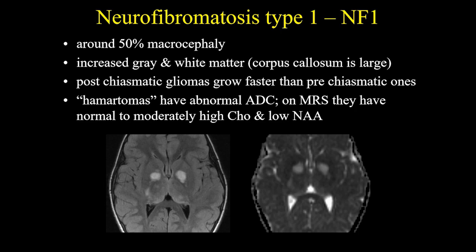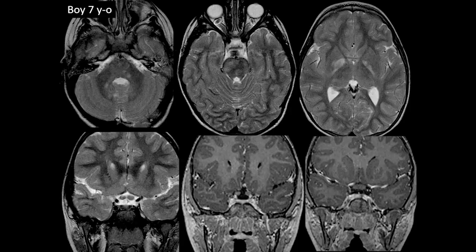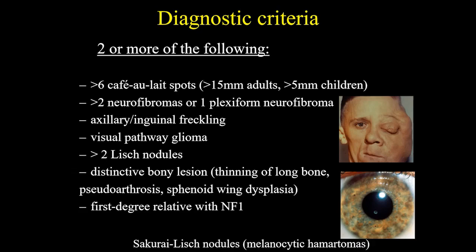Around 50% of patients have macrocephaly, possibly due to increased gray and white matter. Also, you can see that the corpus callosum is enlarged in these patients. Post-chiasmatic gliomas grow faster than pre-chiasmatic ones. Hamartomas have abnormal ADCs, and on spectroscopy they have normal to moderately high choline and low NAA. This is a case of a young boy of 7 years old. He has hamartomas in the brain stem characterized by bright spots on T2, with images also on the globus pallidus and some slight areas of hyperintensity on the thalamus. On the coronal view, you can see enlargement of the optic nerves and also the chiasm, corresponding to gliomas of the visual pathway.